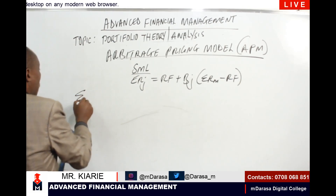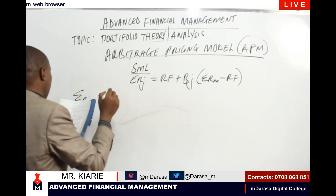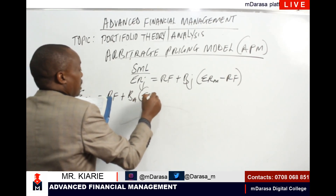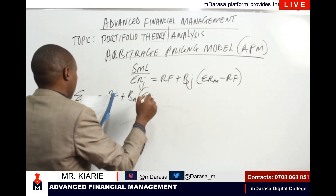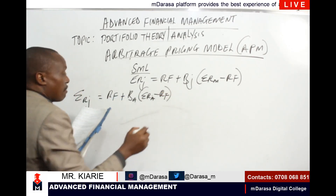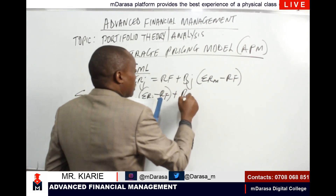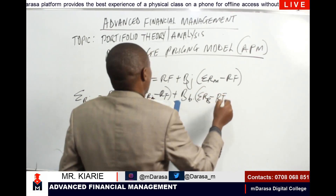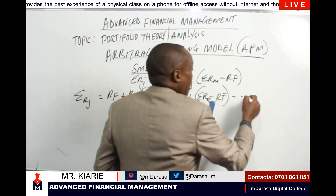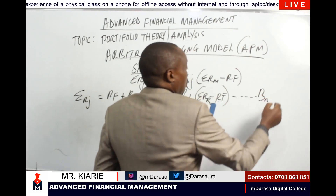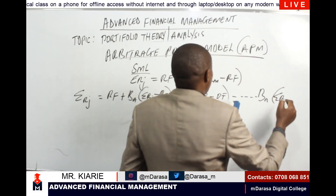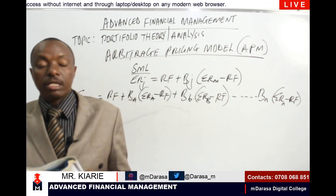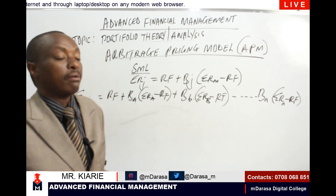Under APM, the expected return of J is given by the risk-free rate (Rf), plus beta of A multiplied by (expected return of market A minus risk-free rate), plus beta of B multiplied by (expected return of B minus risk-free rate), all the way up to beta of N multiplied by (E(RN) minus risk-free rate). So APM deals with a scenario whereby there is more than one factor — that is why we call it a multi-factor model.